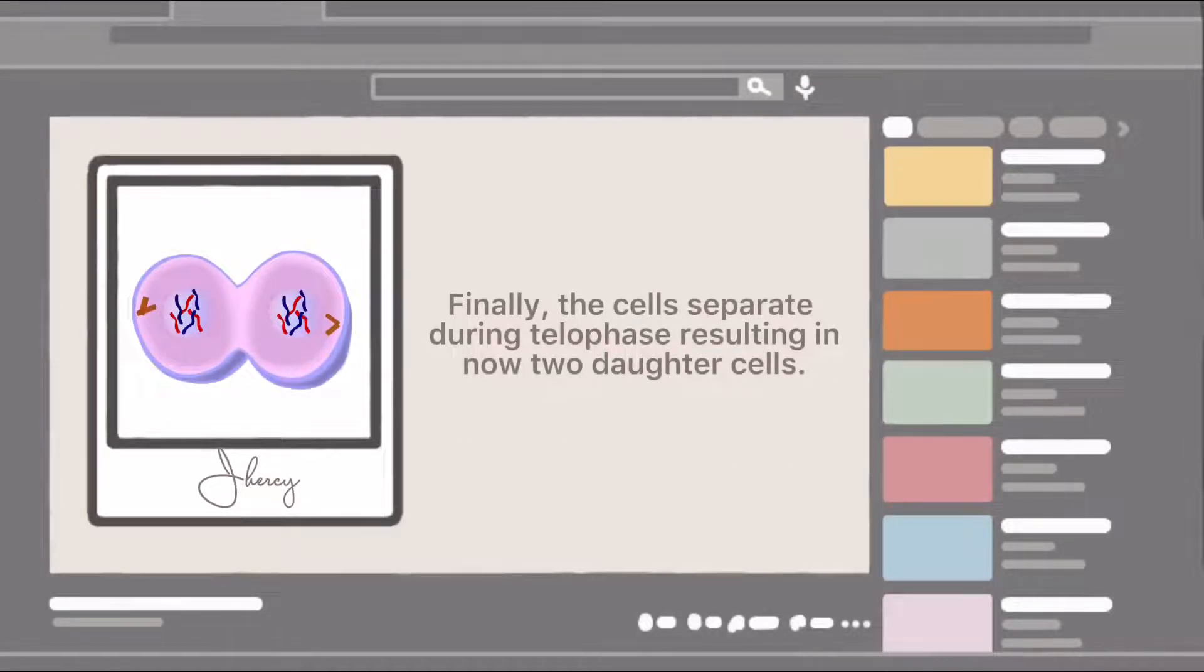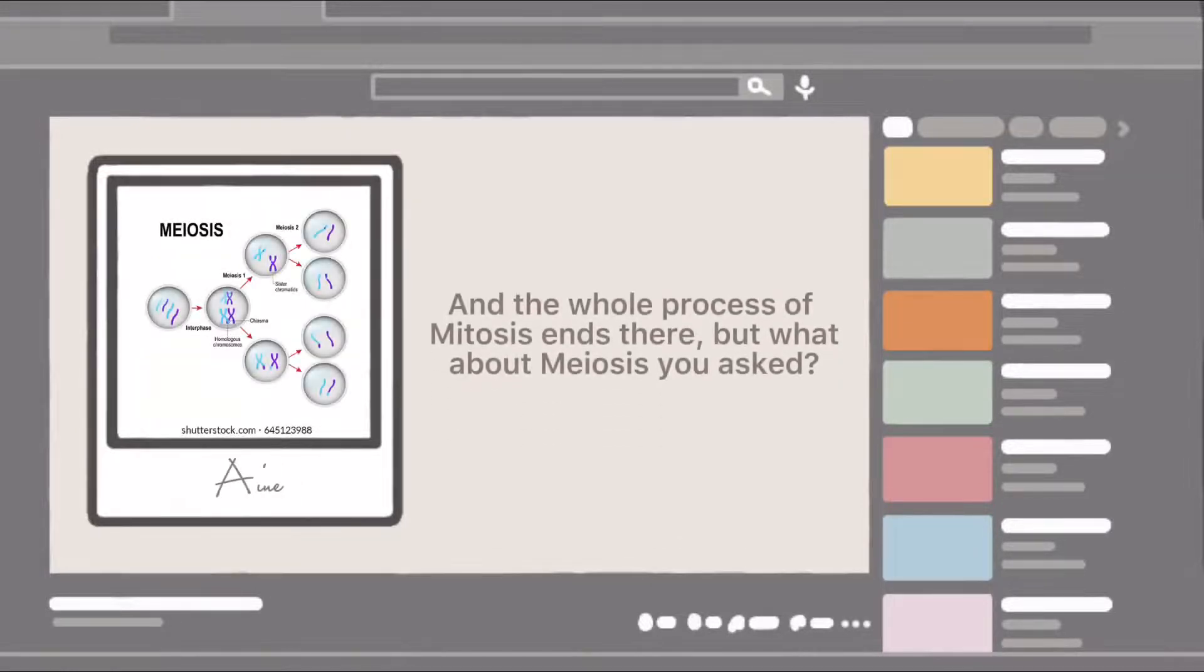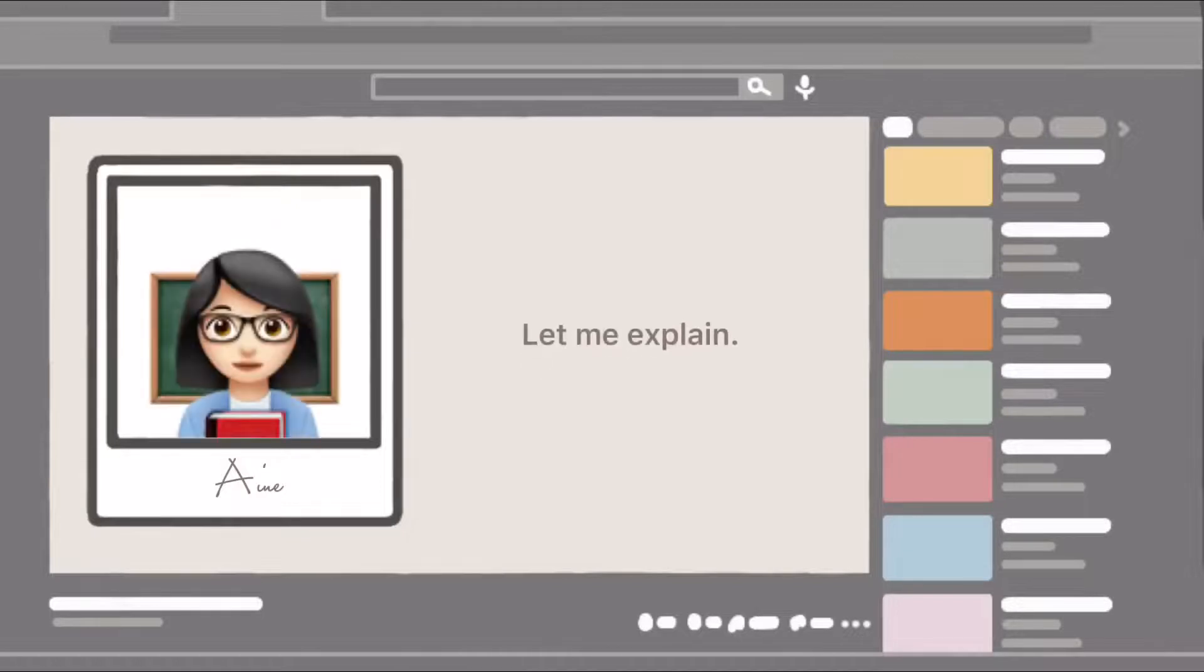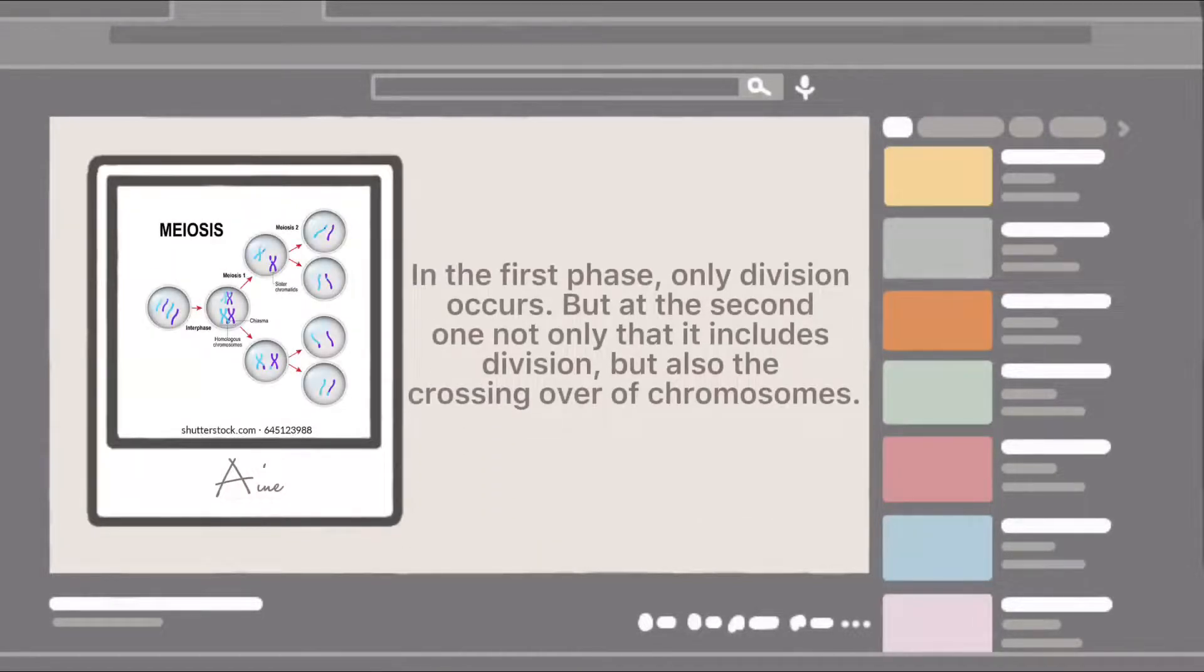Finally, the cells separate during telophase, resulting in now two daughter cells. And the whole process of mitosis ends there. But what about meiosis, you asked? Why does it have two phases? Let me explain. In the first phase, only division occurs.